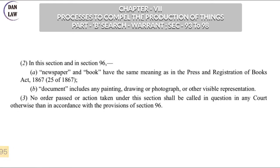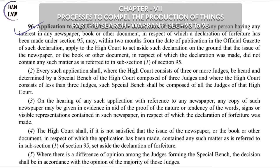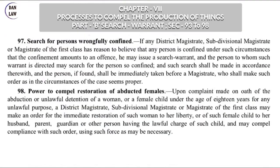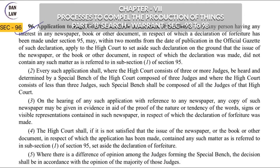Section 96 — application to the High Court to set aside a declaration of forfeiture. If it seems that the declaration of forfeiture is wrong, the aggrieved party can appeal to the High Court under section 96. A 2-month time period will be given for the application from the day the declaration of forfeiture is published. An important question: how many judges can conduct the hearing for forfeiture? The judges should not be less than 3 — all High Court judges, with a minimum of 3.